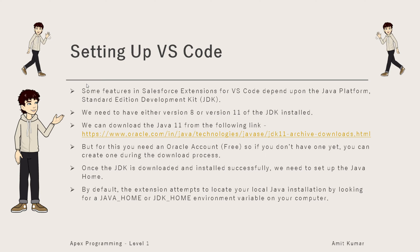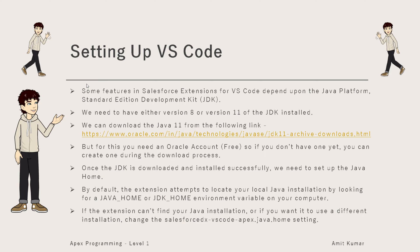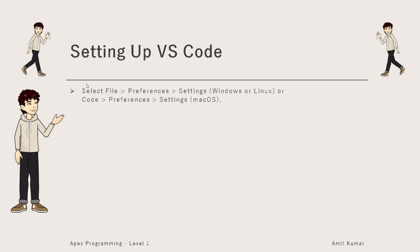By default, the extension attempts to locate your local Java installation by looking for a JAVA_HOME or JDK_HOME environment variable on your computer. If the extension can't find your Java installation, or if you want to use a different installation, change the salesforcedx-vscode-apex.java.home setting in your VS Code to that specific address.